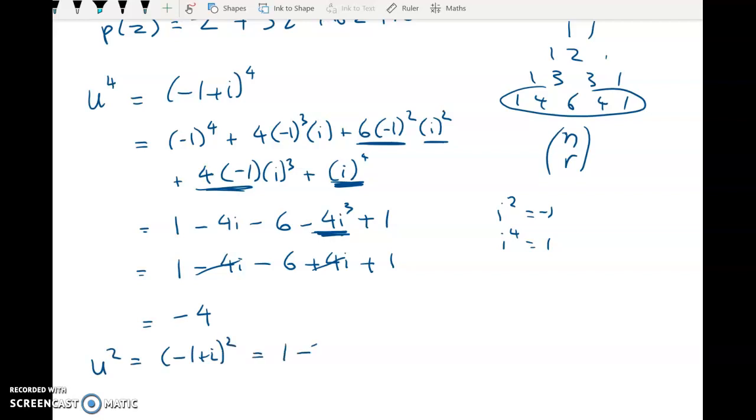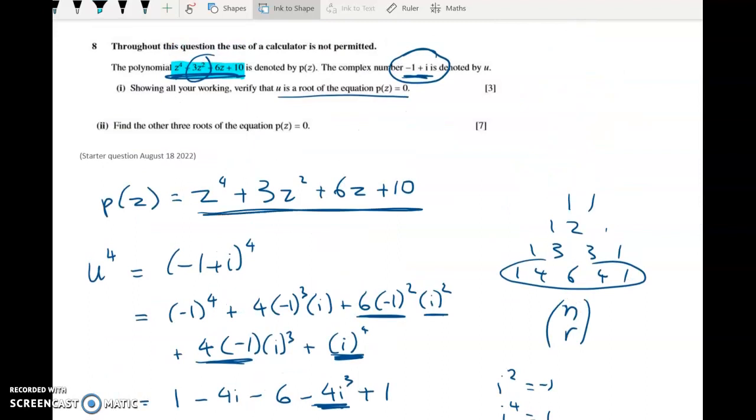And u squared is much faster to do. This gives me 1 minus 2i plus i squared which is simply negative 2i. So with those worked out to be that and that it's much easier to substitute into here without making small but important errors.